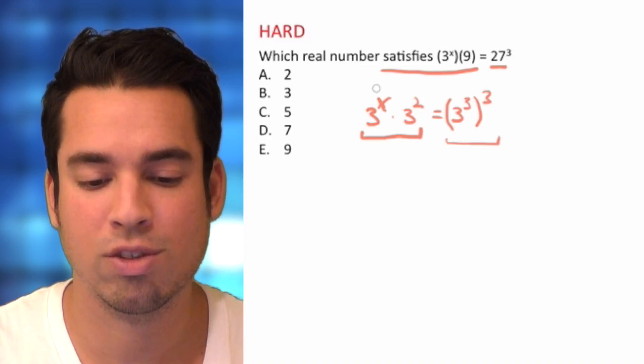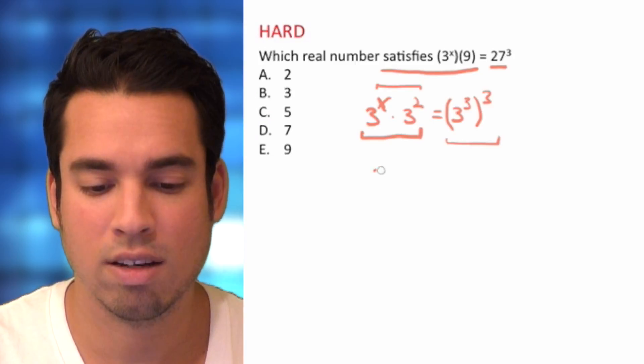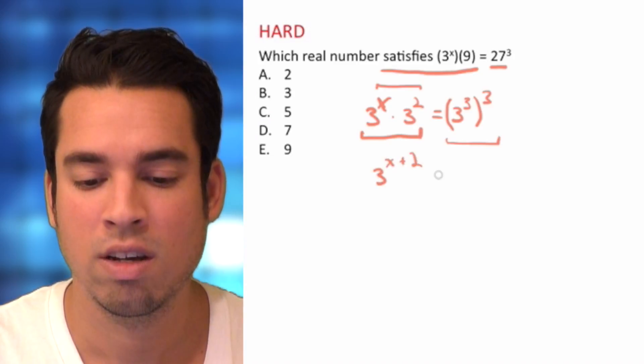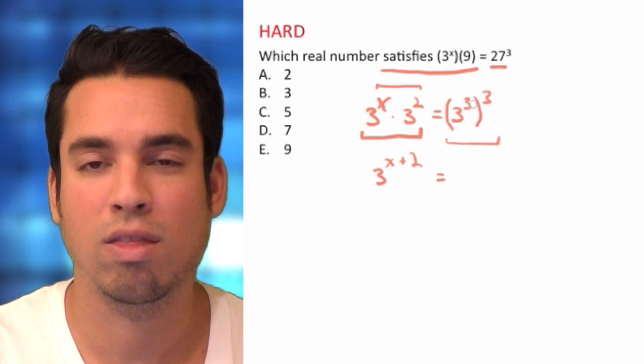And what we're doing is we're just going to add the exponents because we're multiplying. So we've got 3 to the x plus 2 equals. Now what do we do on the right side? We've got 3 to the third to the third power.